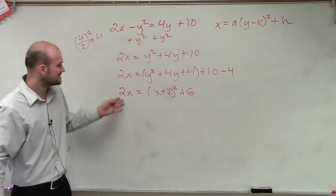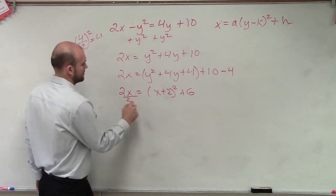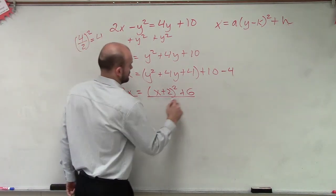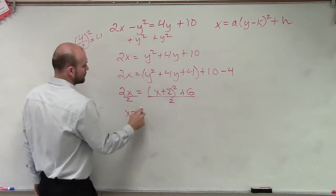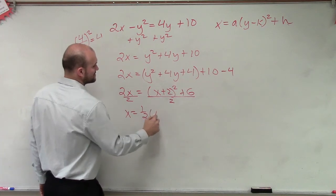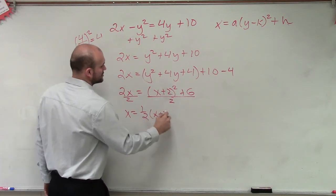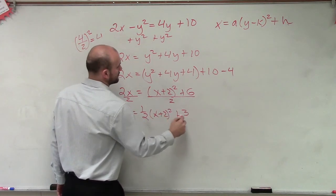Now let's divide by 2. So therefore, I get x equals one-half times y plus 2 squared plus 3.